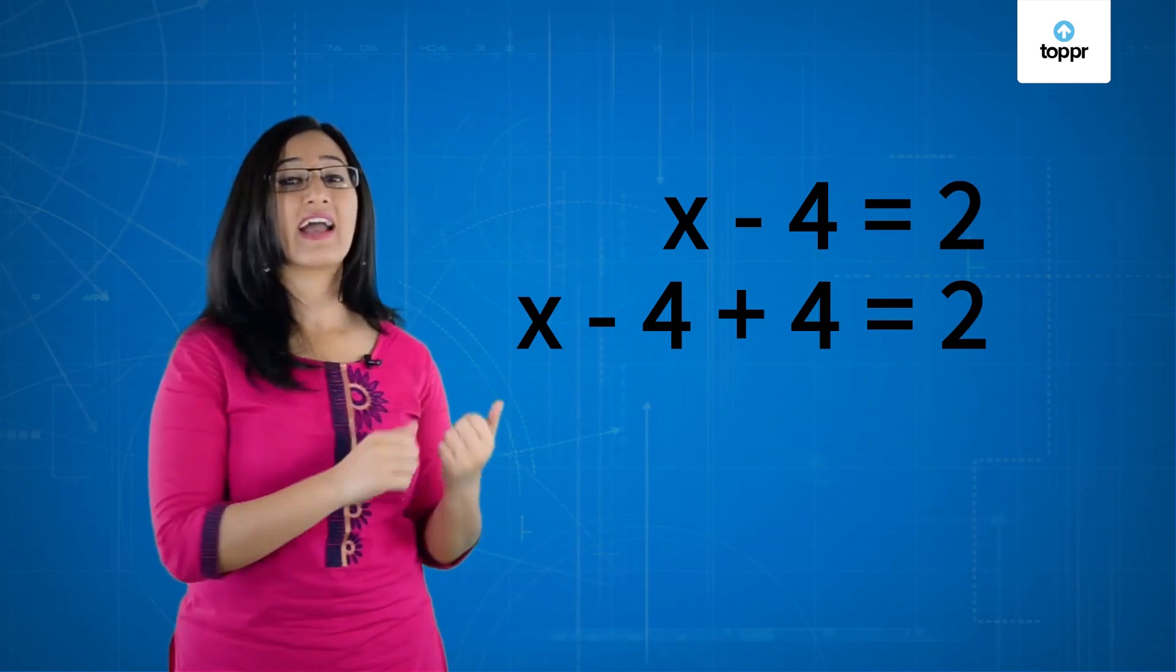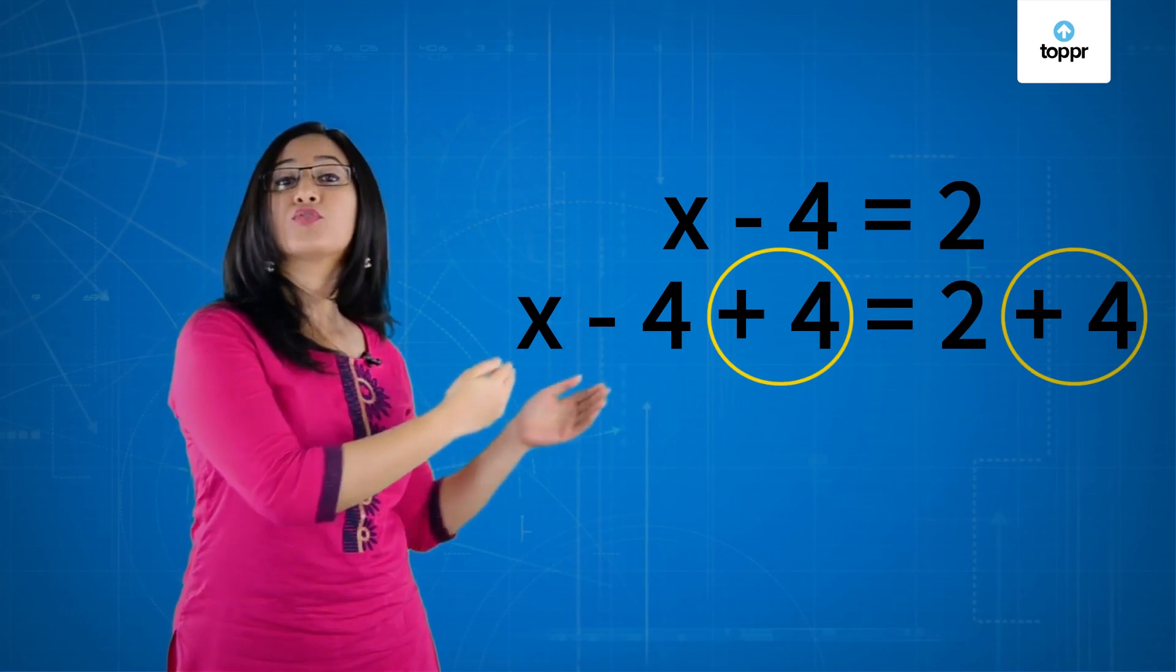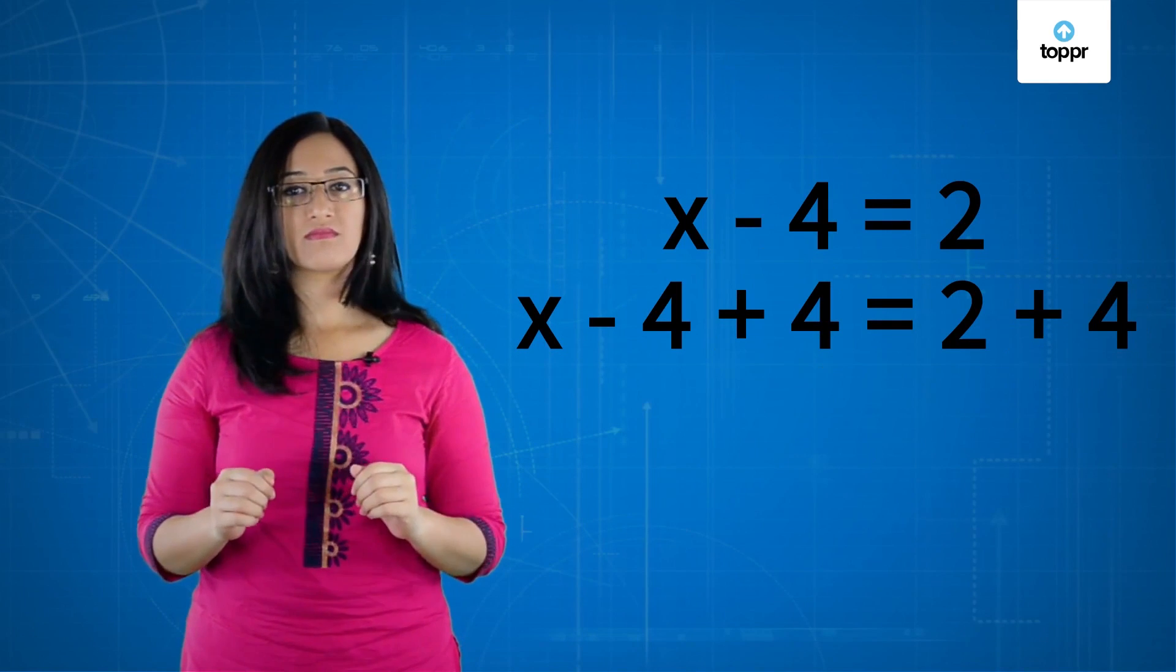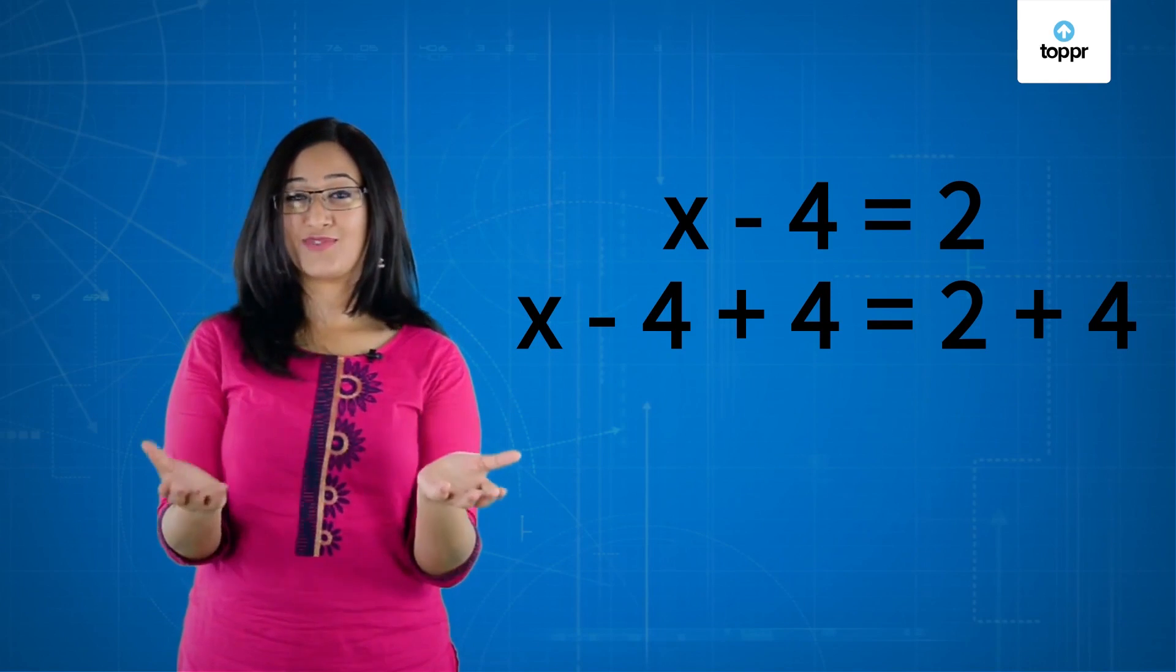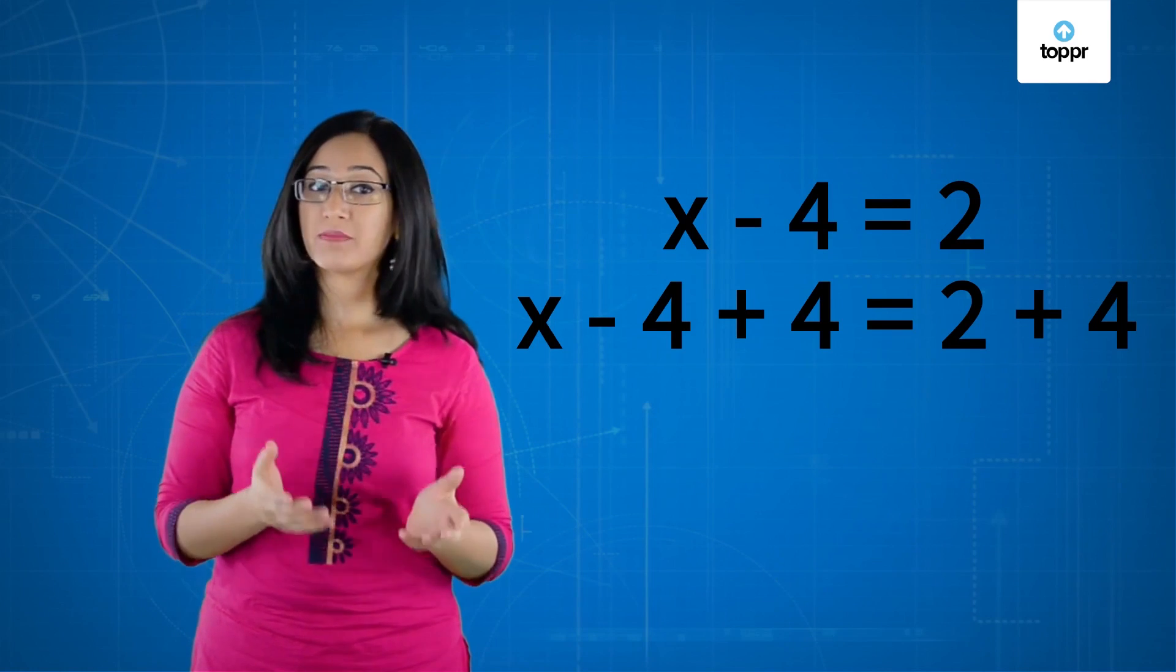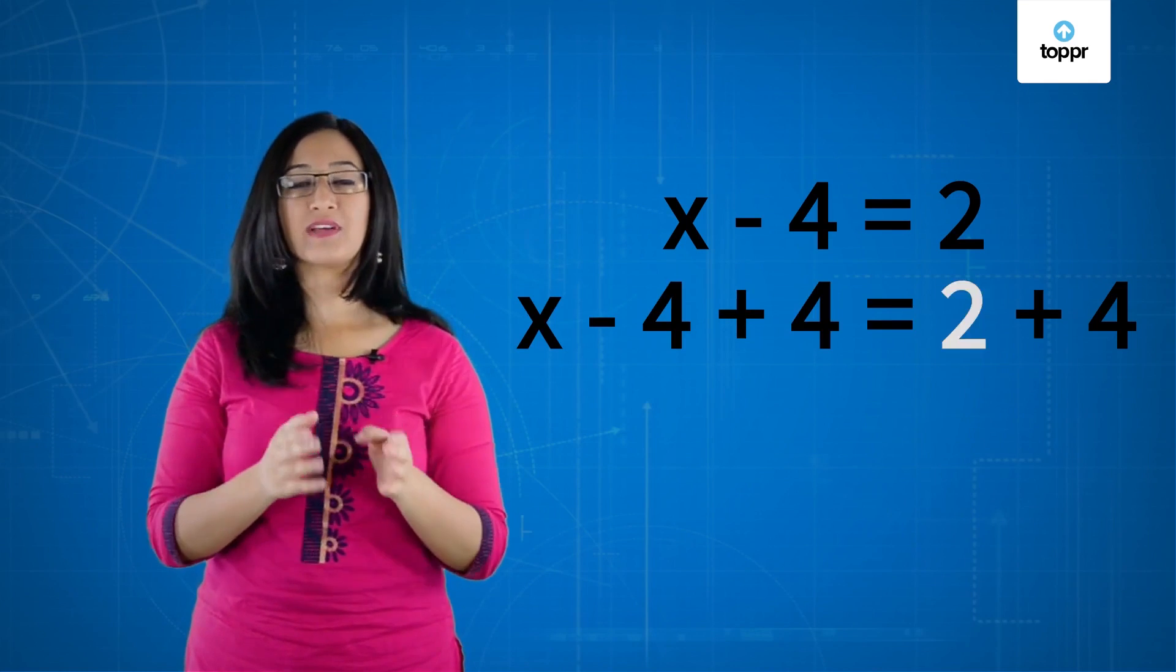So instead of adding 4 to only the left hand side of the equation, we need to add a 4 to both the sides so that both the sides remain equal. I mean, that is what the equal to sign between the two sides stands for, right? Now, once we add 4 to both the sides, the equation becomes x - 4 + 4 is equal to 2 + 4.